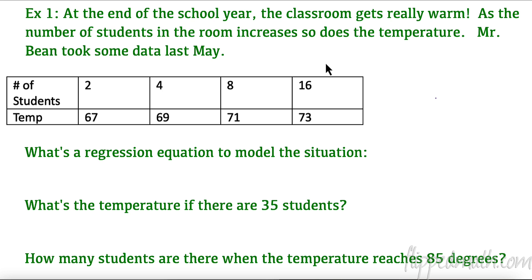Let's look at this first example. At the end of the school year, the classroom gets really warm. As the number of students in the room increases, so does the temperature. Mr. Bean took some data from last May. Now one thing we need to remember is, is this logarithmic? This data is pretty obvious that this is proportionately going up by two, we're multiplying by two. This is more of a constant rate. When the dependent is going up at a more consistent constant rate and the independent is going up quicker proportionately, it's pretty easy to guess that it's going to be logarithmic.